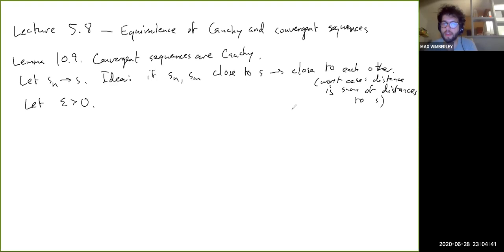What we want to do is make each of those individual distances to S be less than epsilon over two. This is sometimes called the epsilon over two trick — we've already kind of seen this, but it's a very common thing to do.